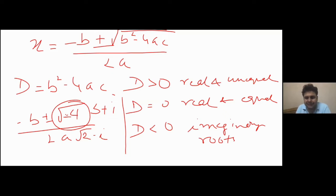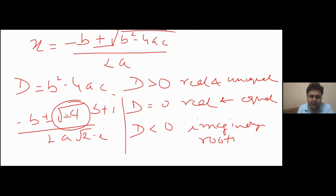To summarize: D greater than 0 gives real and unequal roots; D equal to 0 gives real and equal roots; and D less than 0 gives imaginary roots.